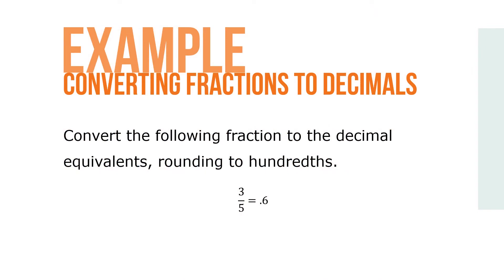Here's an example of how we might convert a fraction to its decimal equivalent, rounding to hundredths. 3 over 5 equals 0.6.